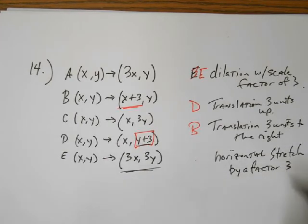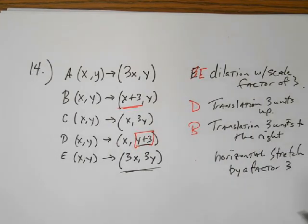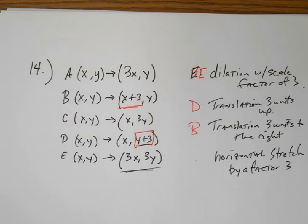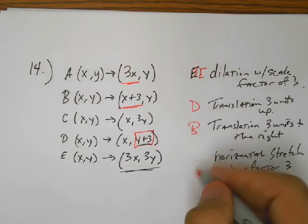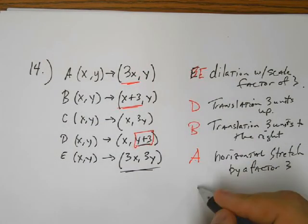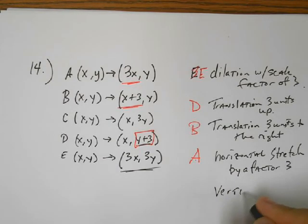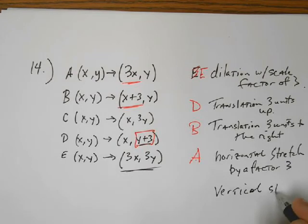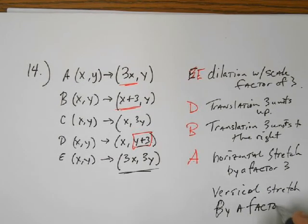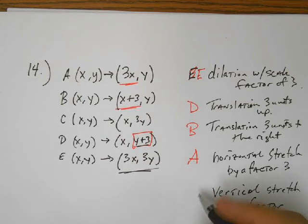Then we've got a horizontal stretch by a factor. So it's not a dilation, so it's different. A dilation would be just overall, everything. This is a horizontal. Well, which one is the horizontal? That would be left and right. So that would be the x-coordinate. So that's this one. That's A. And then our last one, the only one left, which would be a vertical stretch by a factor of three. Okay, so that's C.